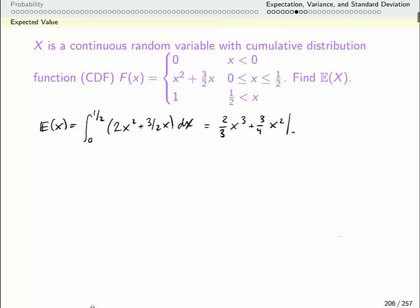So the antiderivative is x cubed times 2 thirds plus x squared times 3 quarters, and we're evaluating that from 0 to 1 half. So this is 2 thirds times 1 half cubed, which is an eighth, plus 3 quarters times 1 half squared, which is a quarter. So this is 4 over 16 times 3 plus 9 over 16 times 3, which is 13 divided by 48.